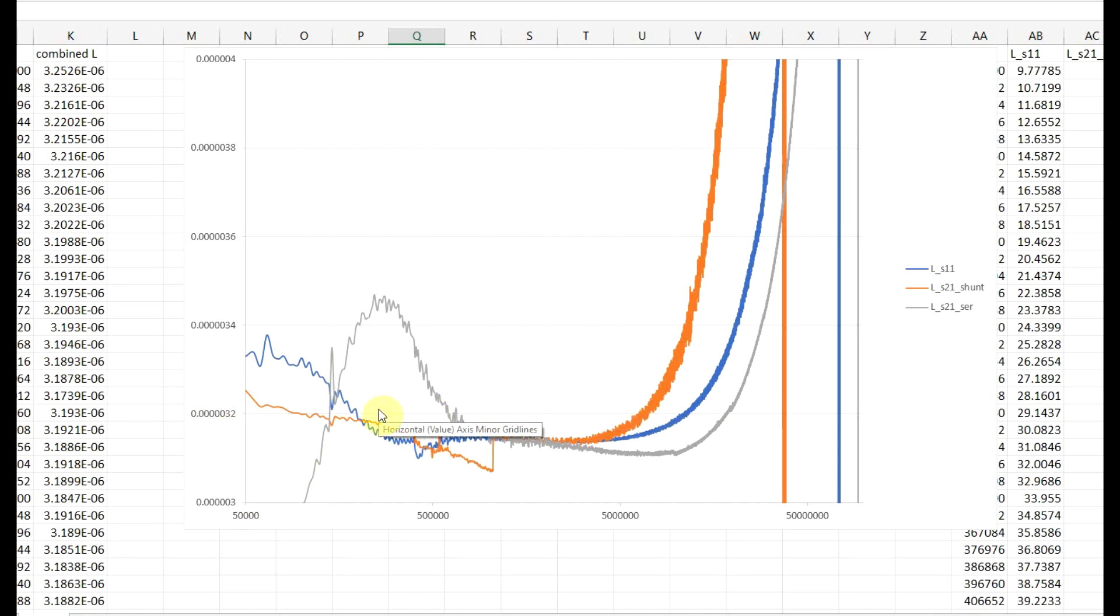So, at very low frequency, the series through method is giving this hump, so this is definitely not correct. We are seeing a hump, at least at very low frequency, even with the single port measurement, but the shunt through measurement is the only one that is giving a more or less flat response. So, at low impedances, at low frequencies, this is more accurate.